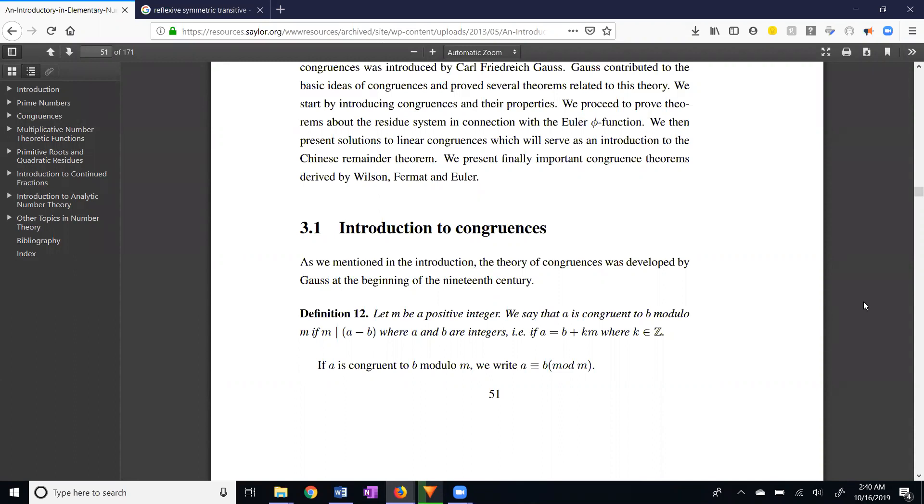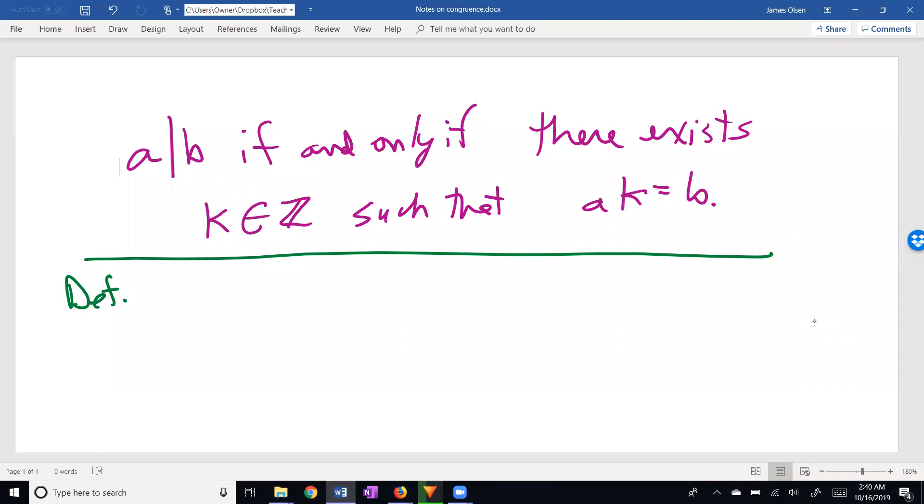I'm going to restate this. Definition of congruence modulo M: We have A, B, and M integers, and we like our modulus to be positive, so M is going to be greater than zero. A and B might be negative. A or B might be negative.